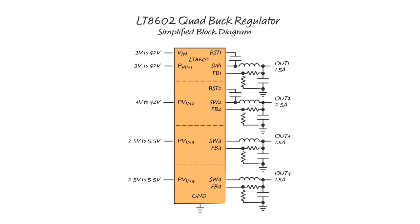The LT8602 has two high voltage buck regulators with an input voltage range of three volts to 42 volts. It also has two low voltage buck regulators with an input voltage range of 2.5 to 5.5 volts.